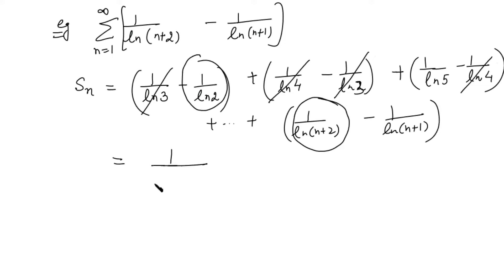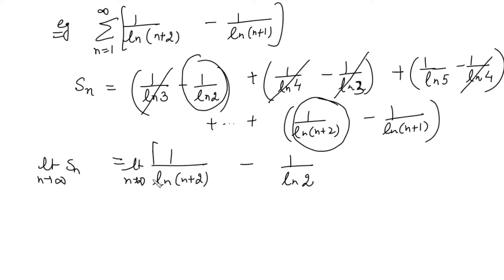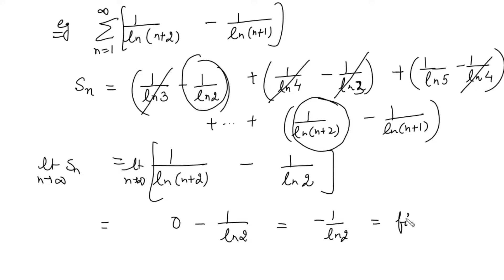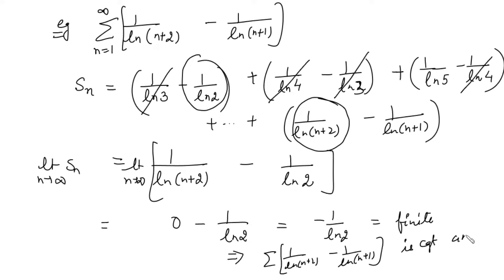After cancellation, Sn = 1/ln(n+2) − 1/ln2. Taking the limit as n → ∞, the first term goes to 0 (since 1/∞ = 0), giving the limit as −1/ln2. Since this value is finite, the series ∑ [1/ln(n+2) − 1/ln(n+1)] is convergent and its sum is −1/ln2.